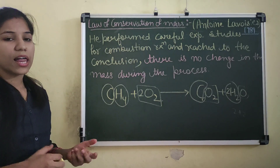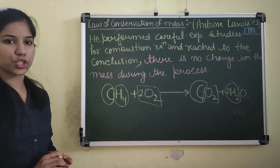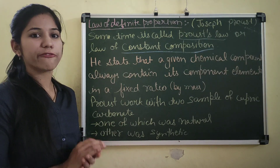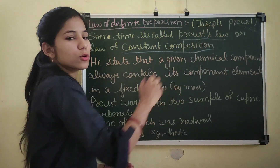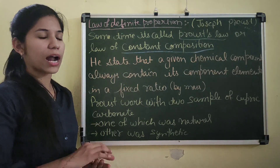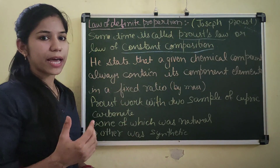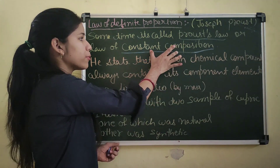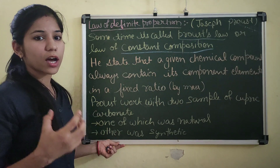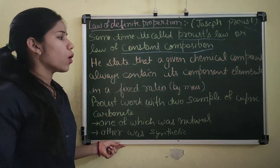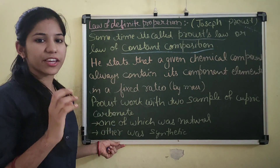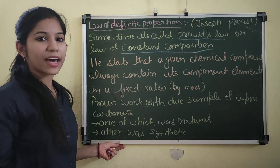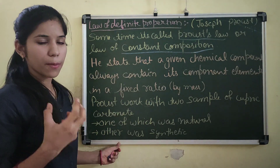Now we move on to the law of definite proportion. This law was given by French chemist Joseph Proust, and it is also called Proust's law. Sometimes it is also called the law of constant composition. The name 'constant composition' shows that the components are fixed. It states that in a given chemical compound, the component elements are present in a fixed ratio by mass.